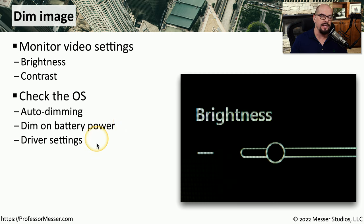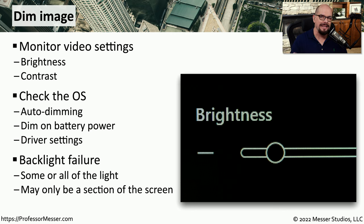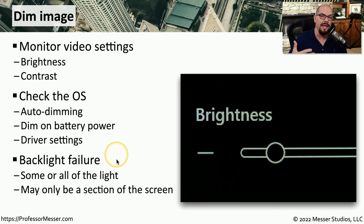These configurations can usually be modified in the driver settings or in a separate display configuration application. If the display seems to be black, but if you look closely you can almost see the display being shown, then you might have a backlight failure. There's a backlight on our LCD that shines a light through the display so that we're able to see the information on the screen. If that backlight fails, it will be very difficult to make out anything that's being displayed. Some monitors allow you to replace the backlight, or you may have to replace the entire display to resolve this issue.